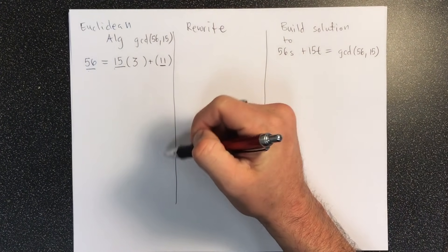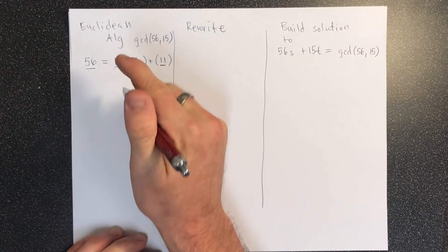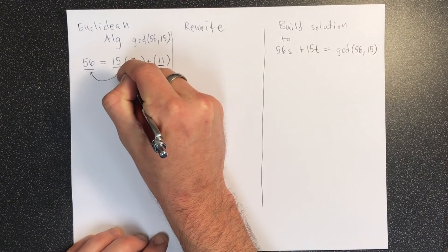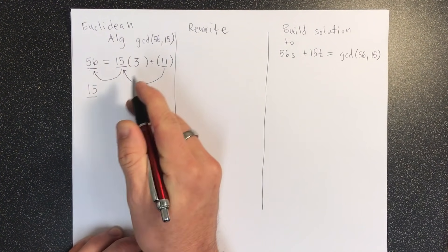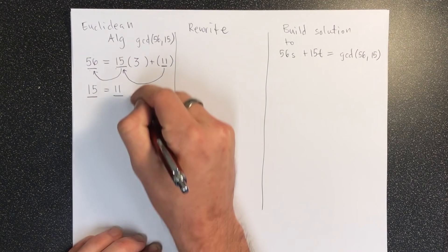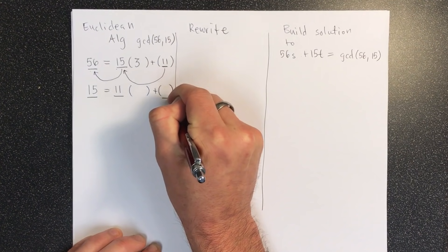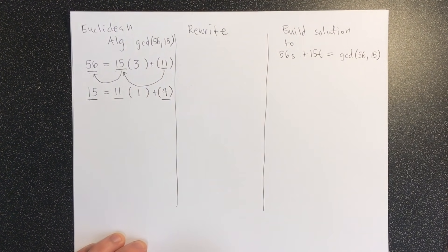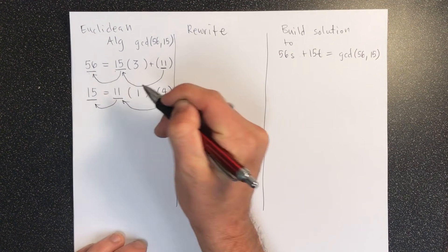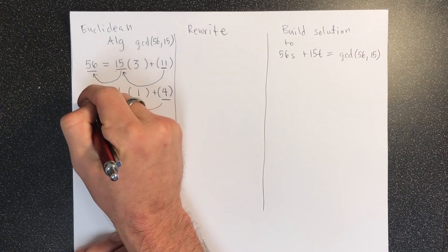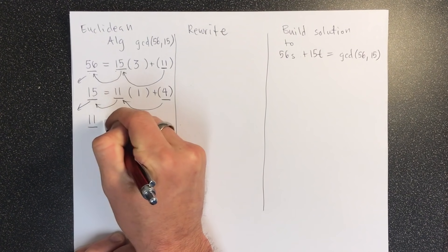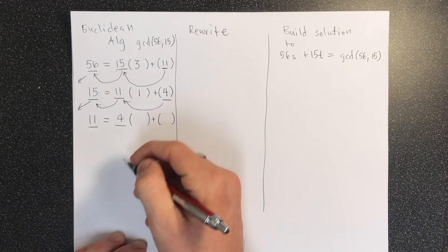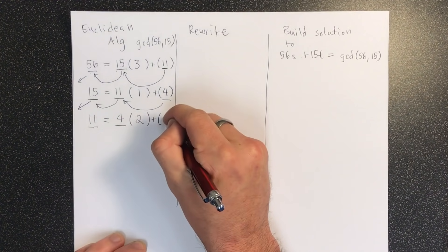So for now let's just run the Euclidean algorithm. Remember that what happens at the next line of the Euclidean algorithm is that value goes into that slot, and that value goes into that slot, and then we play the same game. So 15 moves over to the underlined spot, 11 moves over to the underlined spot, and now I need a new quotient and a new remainder, and I'm going to underline the new remainder. So 15—11 goes into 15 one time with a remainder of 4. Everything moves over one slot. Notice that it's always the underlined things that are moving. These ones are just kind of leaving, right? So we have 11 is equal to 4. We need a quotient and a remainder. 4 goes into 11 two times. 2 times 4 is 8 with a remainder of 3.